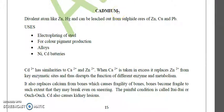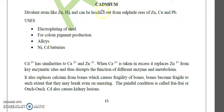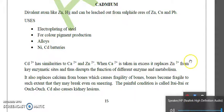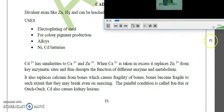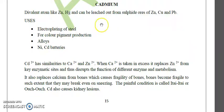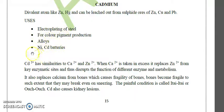Another heavy metal is cadmium, which is a divalent atom (Cd²⁺) and represents a d-block element. It can be leached from sulfide ores of zinc, copper, or lead. The uses of cadmium include electroplating of steel, color and pigment production, and alloy production.